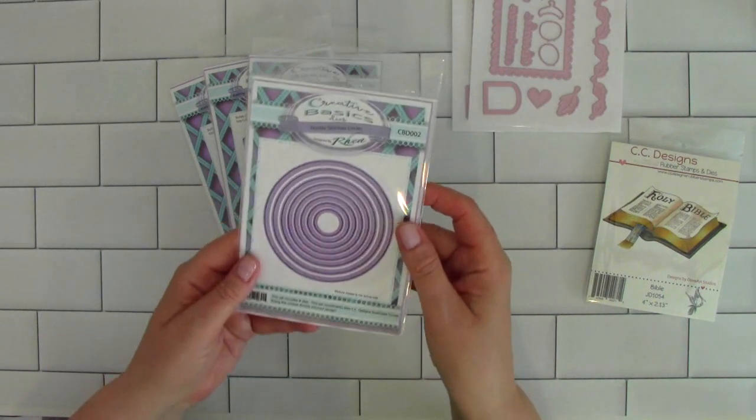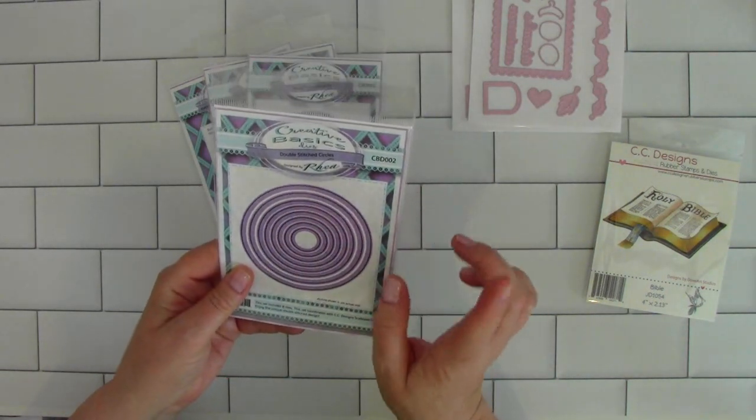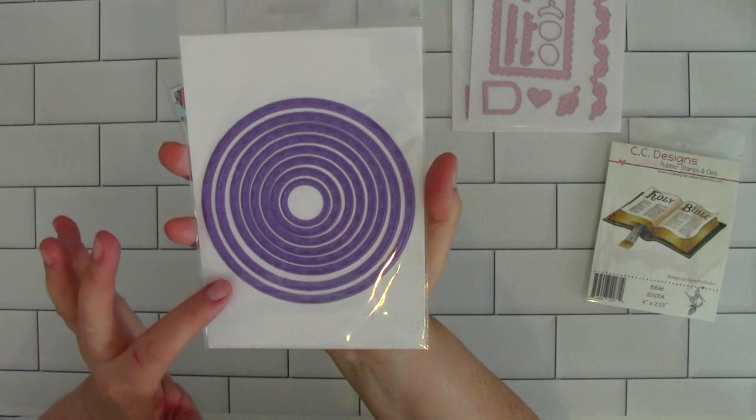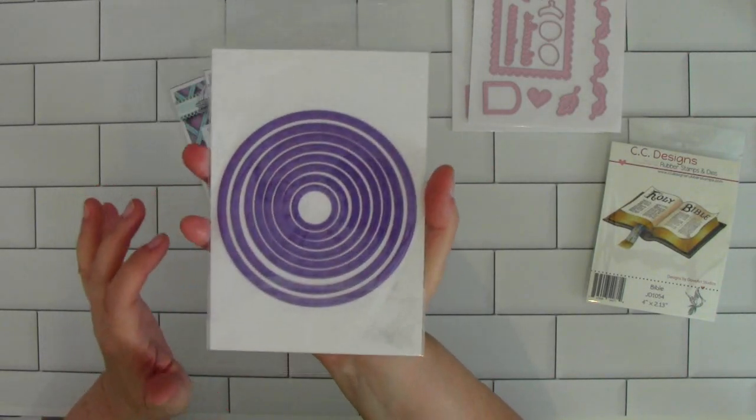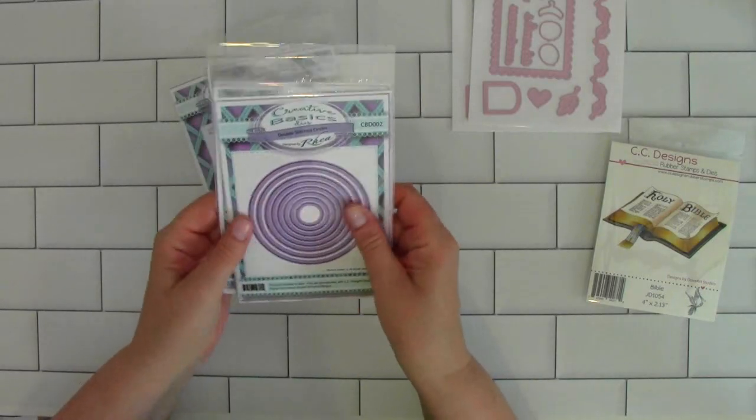I picked up two of these basic double stitched circles. You get eight of them in the set.